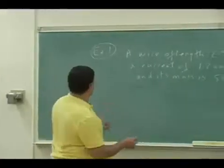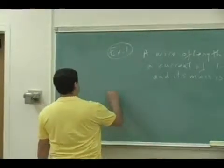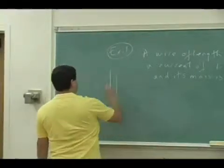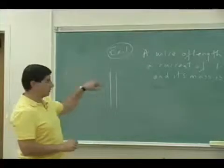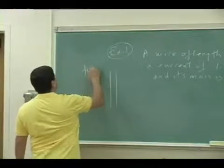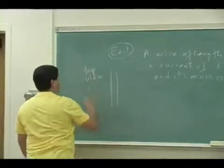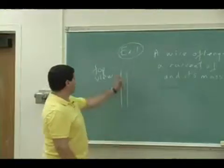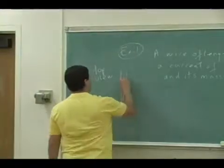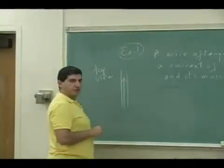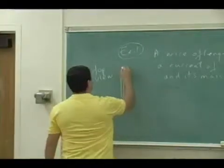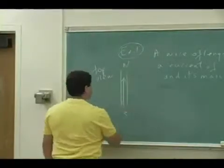So what the picture looks like is the wire is something like this. If I look at it from the top view, and the current is going up this way, south to north. So this is like north, this is south.